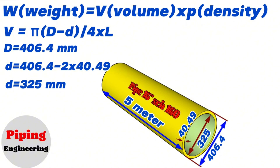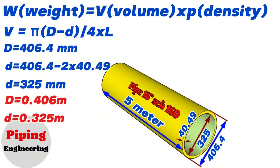These dimensions should also be converted to meters. So the outside diameter of the 16-inch pipe in our example is 0.406 meters and the inside diameter is 0.325 meters. We also know that the length of the pipe is 5 meters.